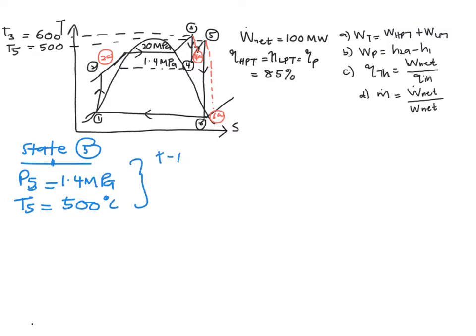You will obtain H5 equals 3474.8 kJ per kg, and you will need S5 in order to solve for your isentropic value. So S5 equals 7.6047 kJ per kg·K.